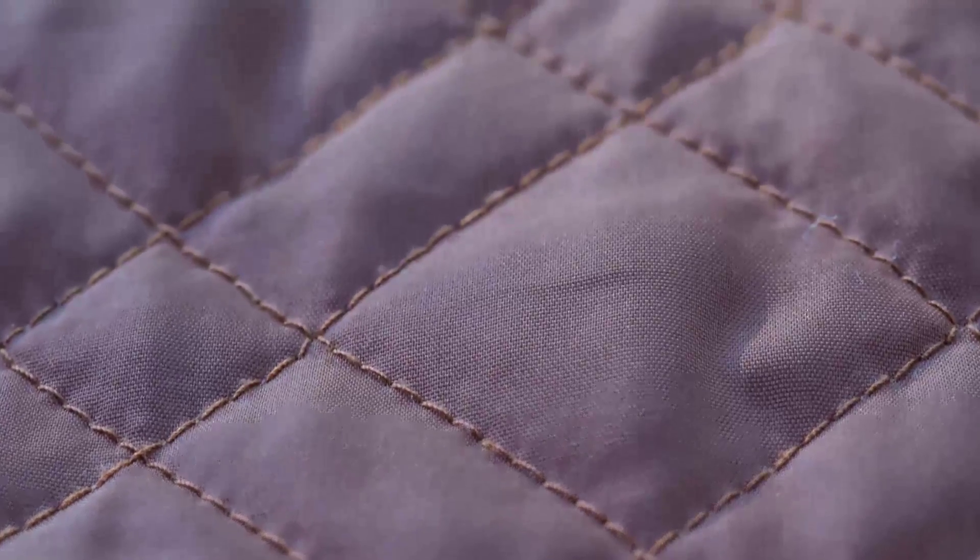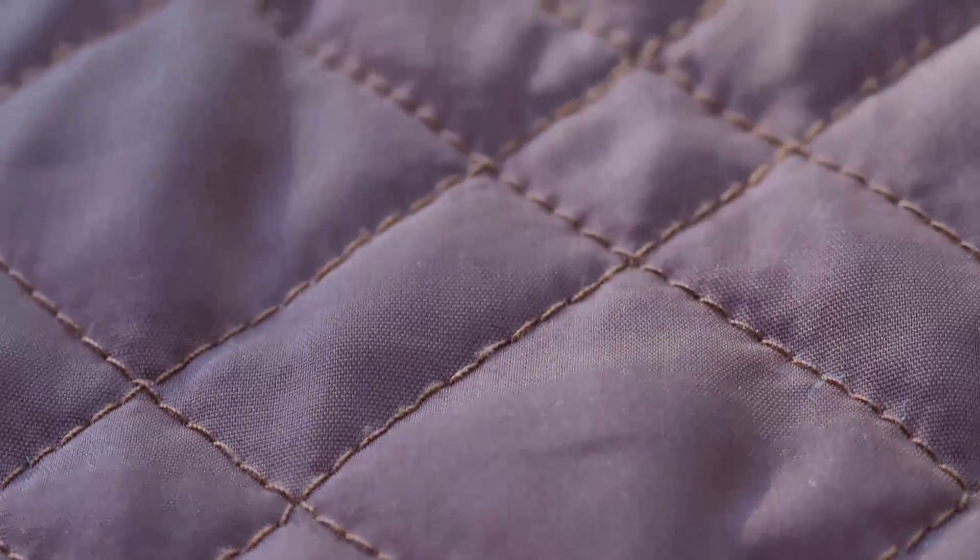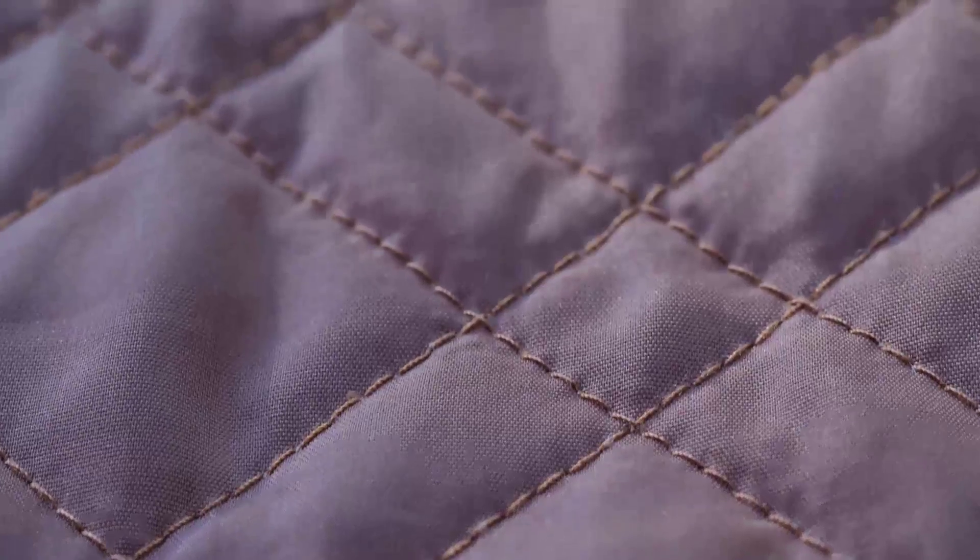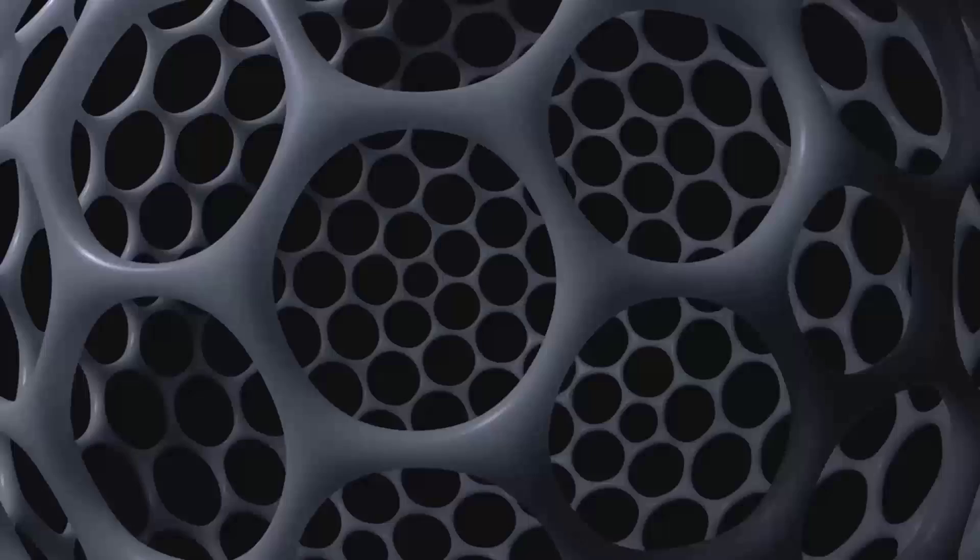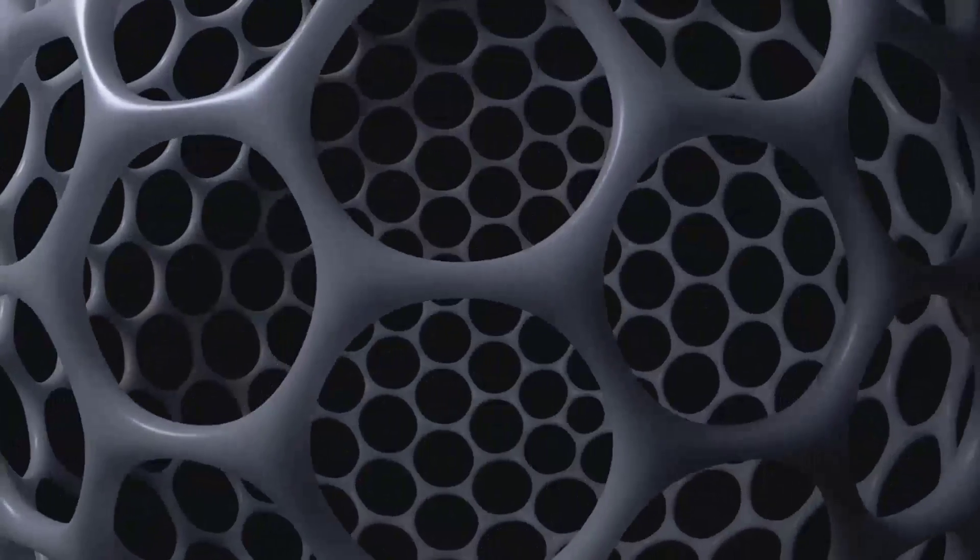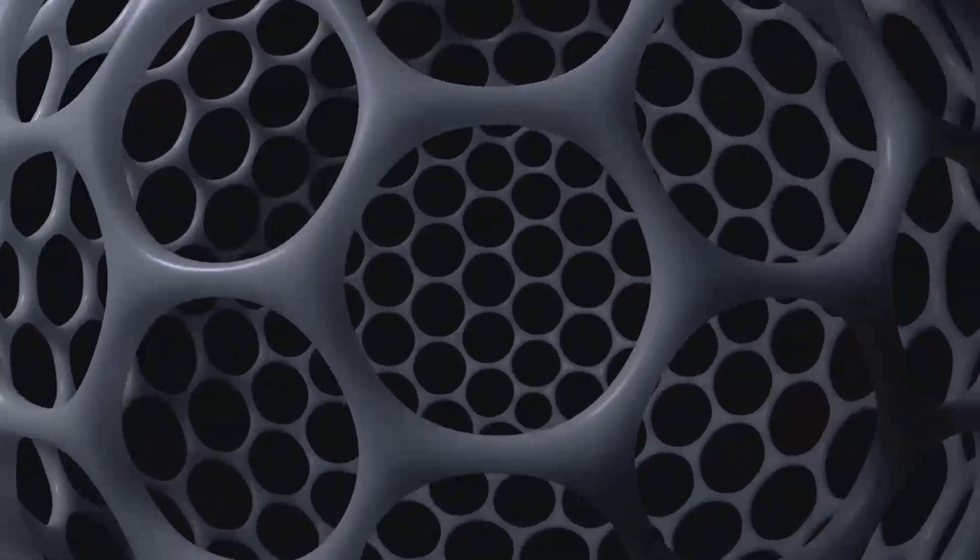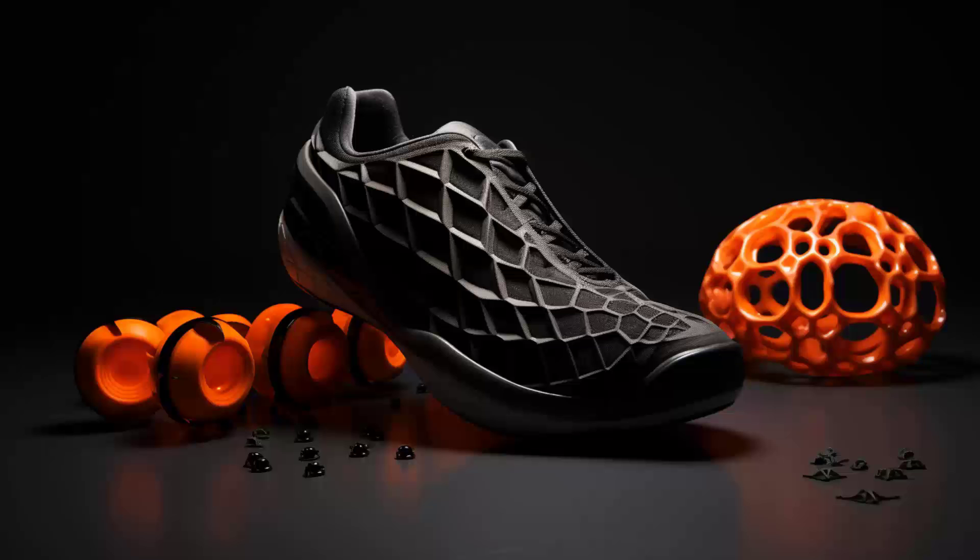Moving on to textiles, nanotech is weaving magic, quite literally. It's making fabrics water-resistant, stain-resistant, wrinkle-free, and even UV-protective. Plus, with nanotech, clothes can now have antibacterial properties or can regulate body temperature, enhancing comfort and hygiene.